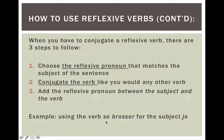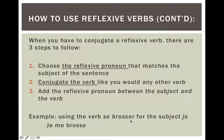So for example, if we have the verb se brosser, which means "to brush," and you need to conjugate it for the subject je: step one, we choose the reflexive pronoun that matches the subject — our subject is je, so our reflexive pronoun will be me. Then we conjugate it like any other verb — it's a regular -er verb, so we drop the -er and put an -e back. Then we add the reflexive pronoun in. So it'll look like je me brosse. We start with the subject, then place the reflexive pronoun between the subject and the verb, with the verb conjugated normally.